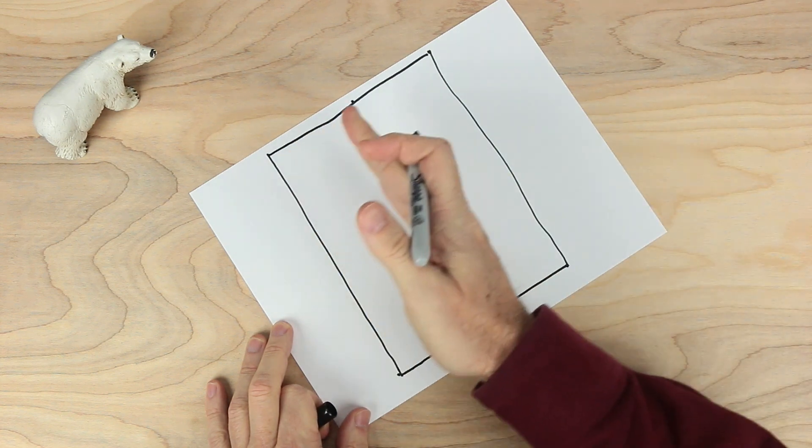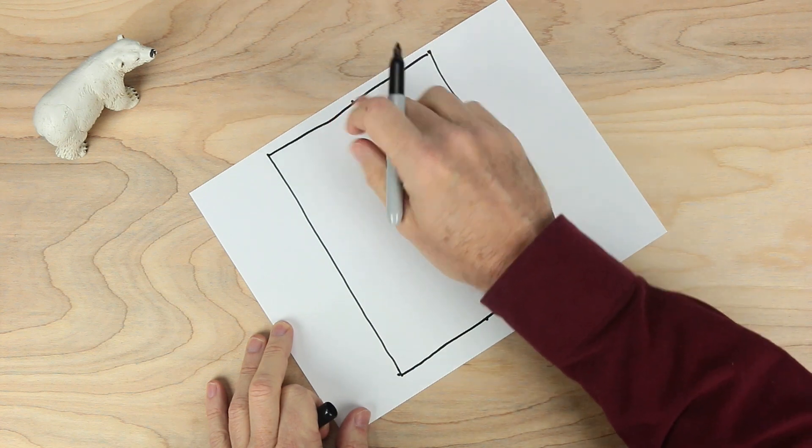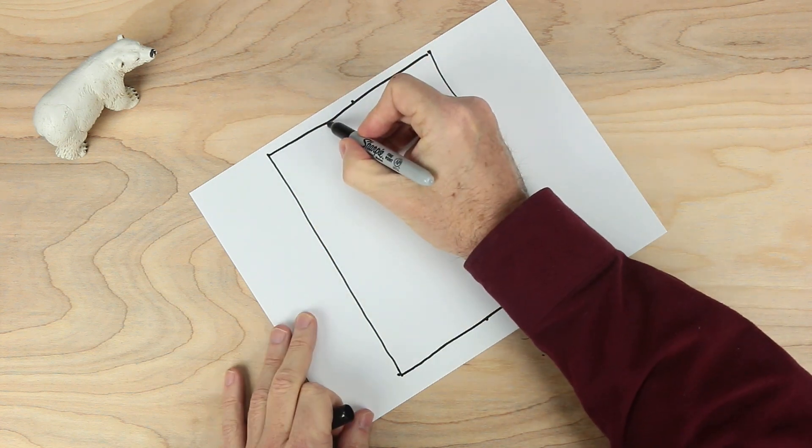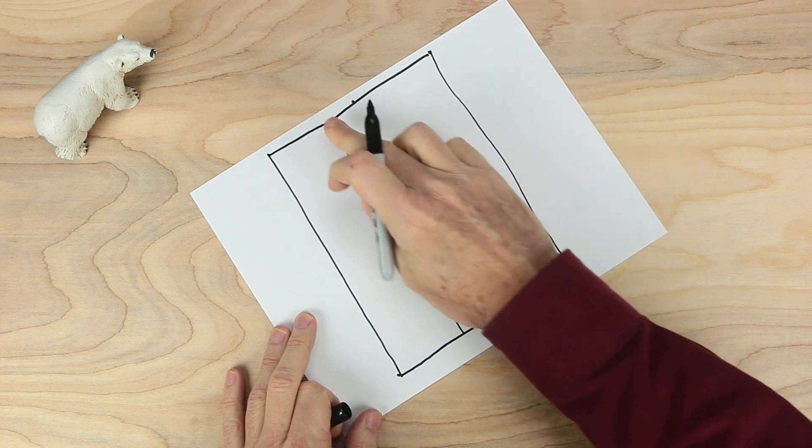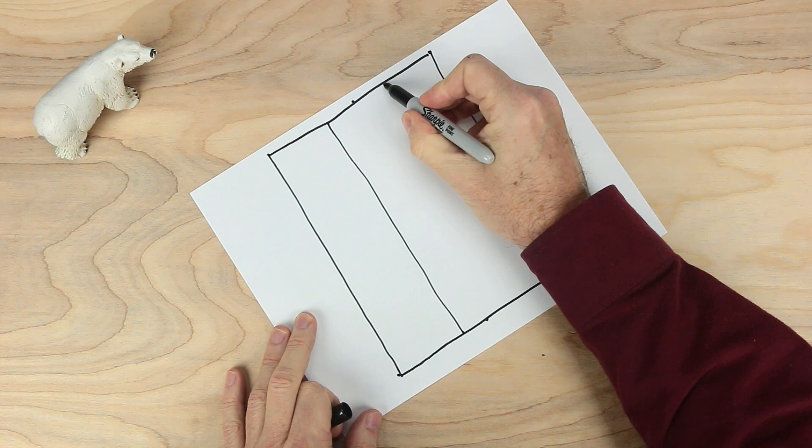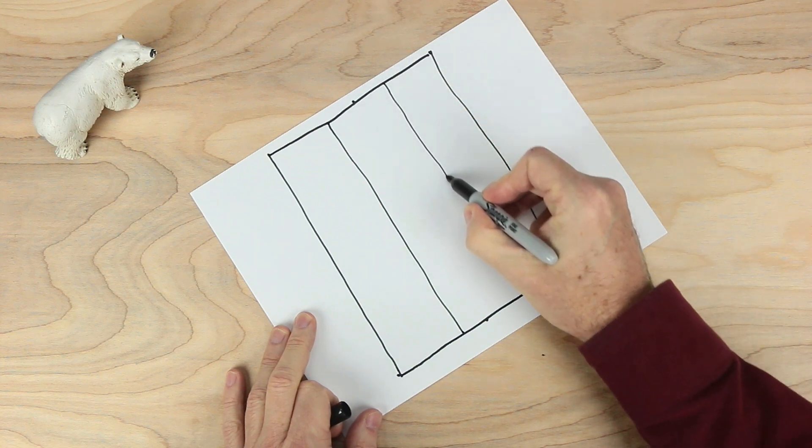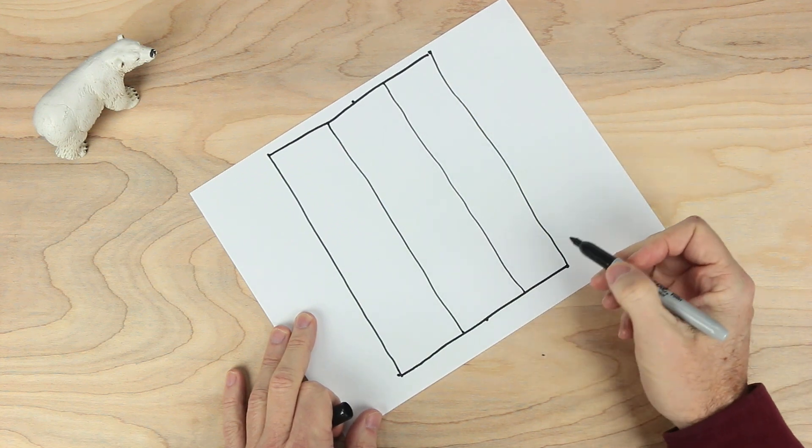Now we want to divide this into thirds. So I'm going to think about maybe about right here, drawing a line coming down. And then about halfway between here and here, starting another line. And look, I have those look like good thirds.